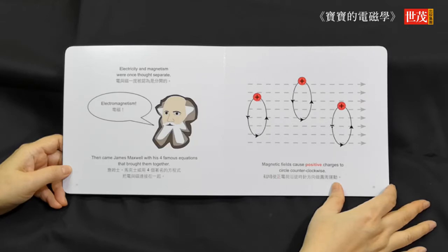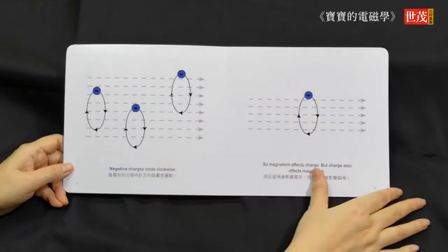Magnetic fields cause positive charges to circle counterclockwise. Negative charges circle clockwise.